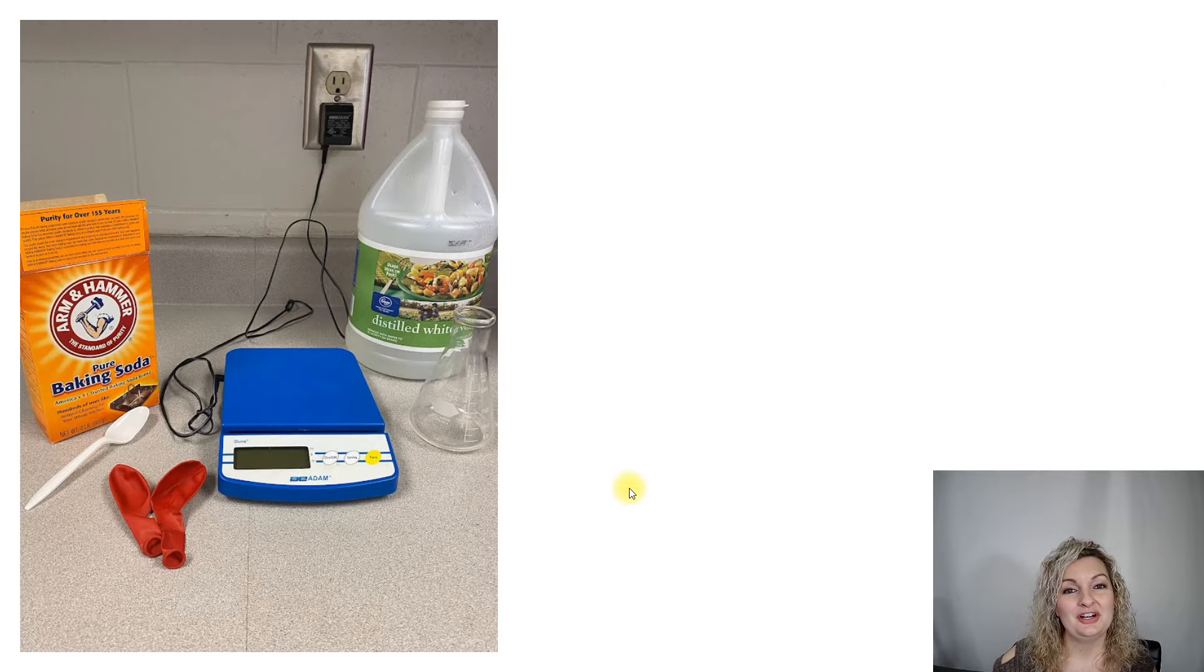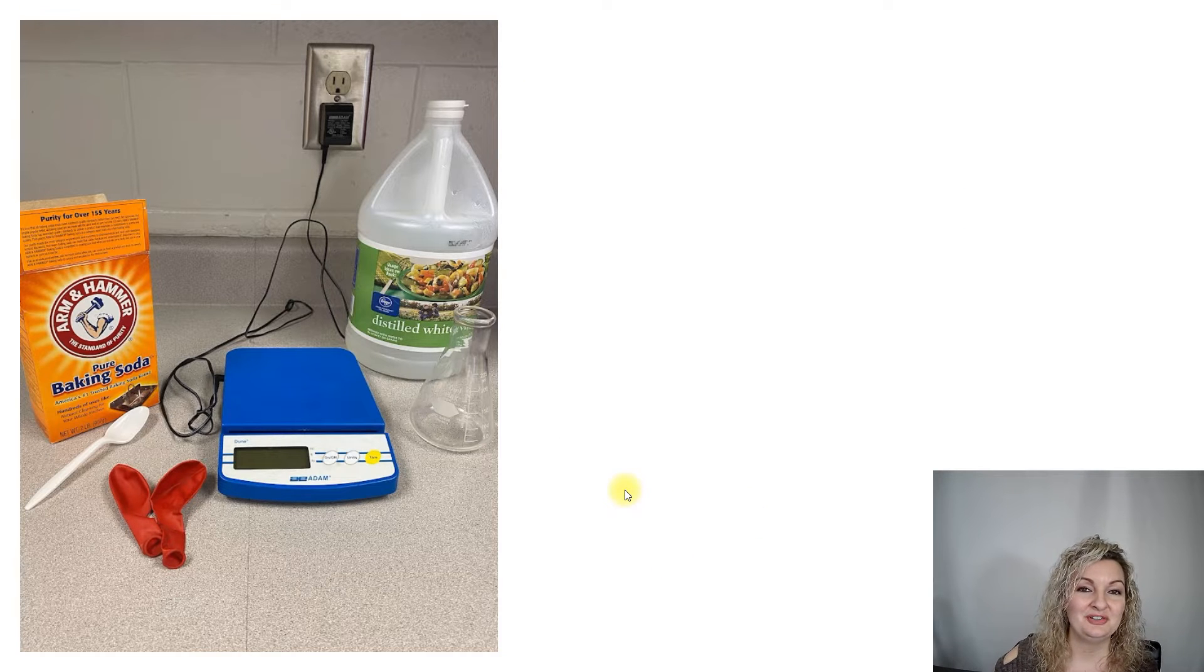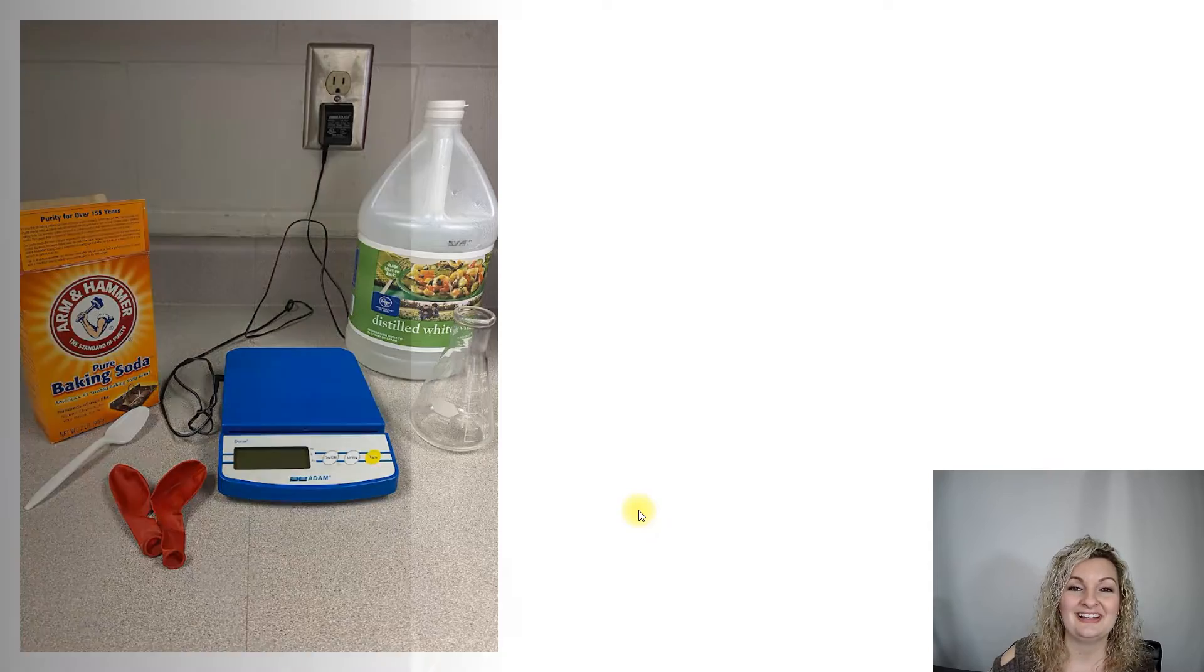So we're going to start and we're going to use all of these materials here that you see. We're going to be mixing vinegar and baking soda inside a flask. We're going to need a spoon, some balloons, a scale. I'm using a digital scale today and you're going to need just a little cup in order to measure out your baking soda. So let's go ahead and get started.